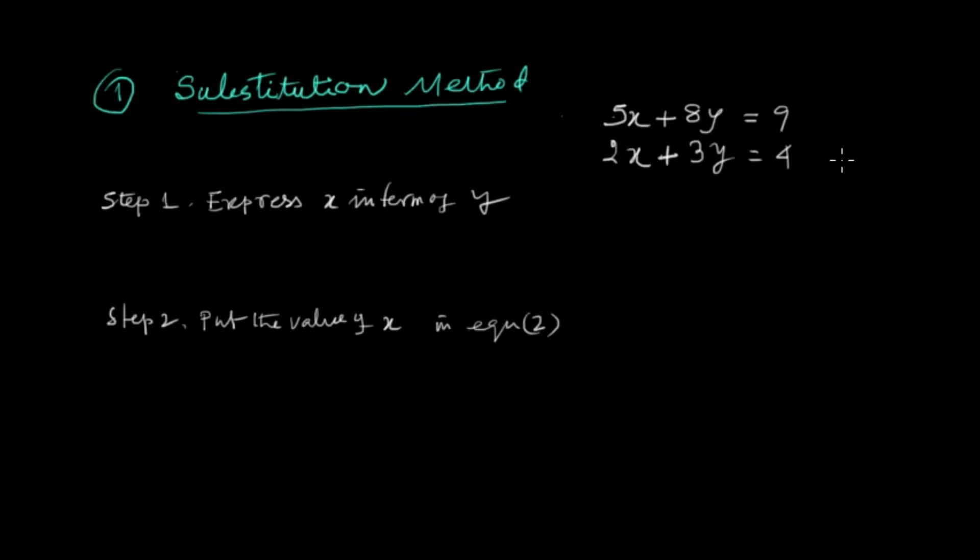Here we are getting two linear equations. One is 5x plus 8y equals 9, another is 2x plus 3y equals 4. Step 1: we will express equation 1, we will take equation 1 and express x in terms of y.